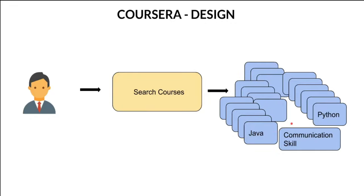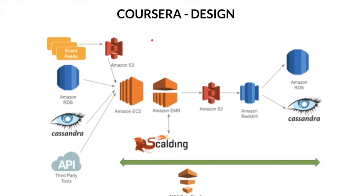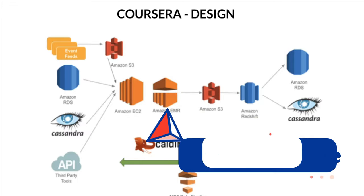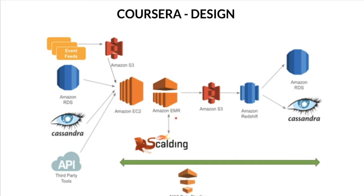Now let's see the technologies used to build the system. What they are using is S3 bucket for storage, Amazon Redshift which is a data warehouse — it's like a database but it can handle terabytes of data. EMR is Elastic MapReduce, it's for running jobs. EC2 is for computing, Amazon RDS is a database, and Cassandra is a NoSQL database. AWS Data Pipeline is used for extracting data from different data sources.